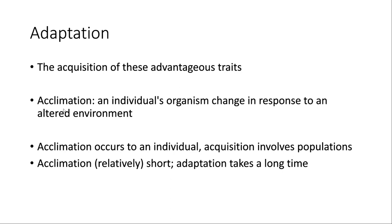One way to think about acclimation: professional runners, especially mid-distance and distance runners, will often go to high altitude locations to train. Near Utah, professional runners go for weeks at a time. At higher elevation there's less oxygen, so their bodies naturally acclimate — producing more red blood cells so the body can more efficiently transport oxygen to the muscles.